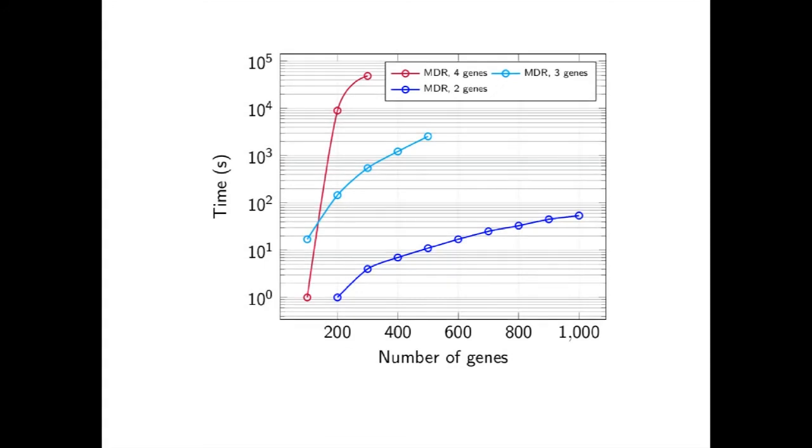This graph shows the running time for MDR, the industry standard tool for detecting epistasis. On the x-axis, we have the number of genes in the data set, and on the y-axis we have the running time for the test. The different lines represent tests run for multiple interactions.